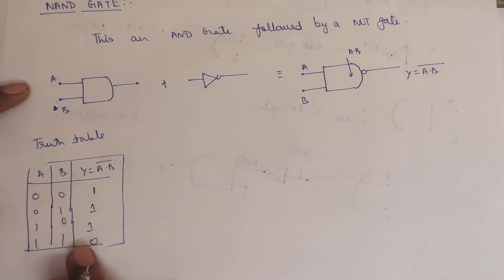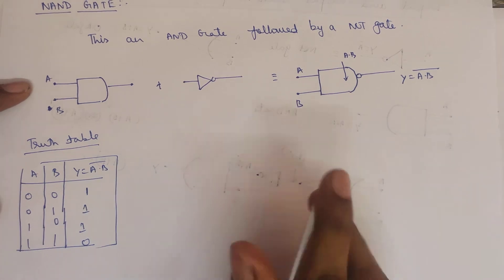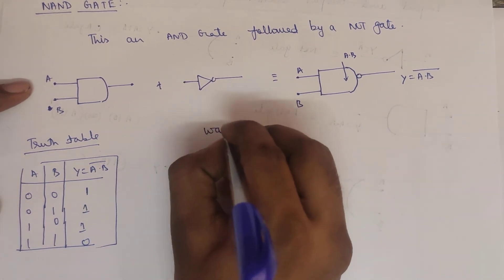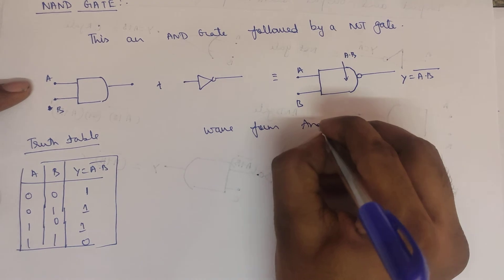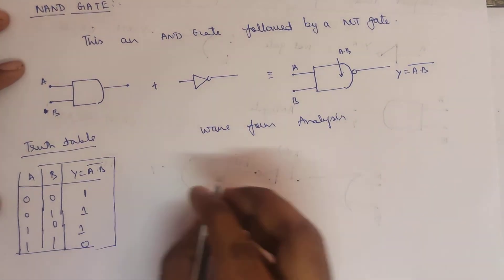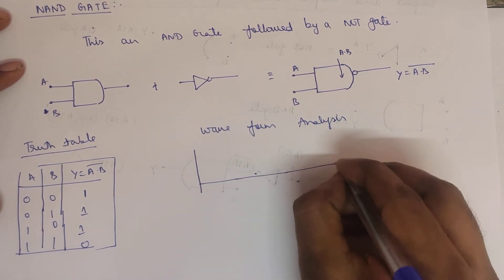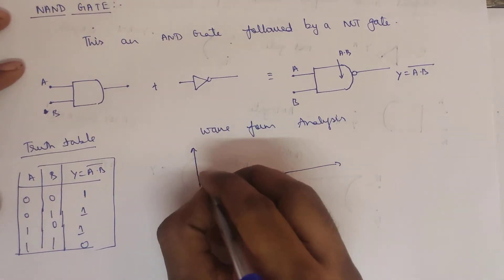So now then another truth table for NAND gate. You can do waveform analysis. Same thing, we have to give two inputs.